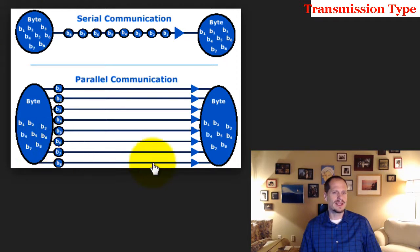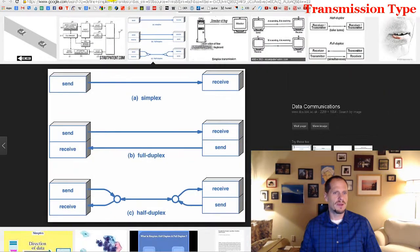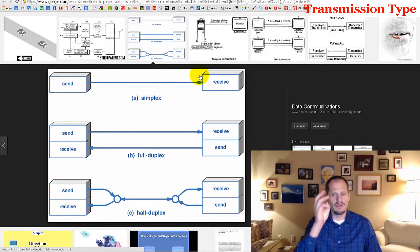So that's one way that we could send data over a connection medium - it could either be serial or it could be parallel. And then when we're sending data between two devices, there's three types of ways data could communicate, the ways those devices can communicate.